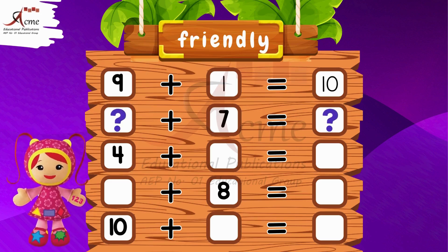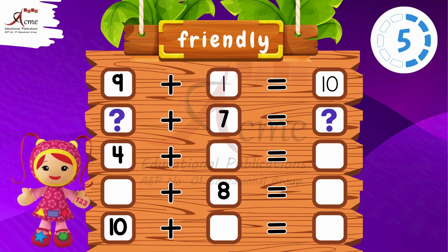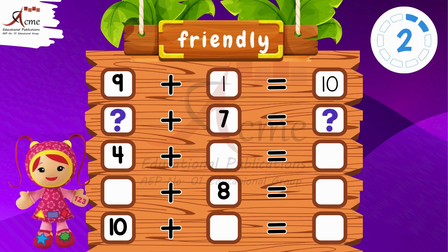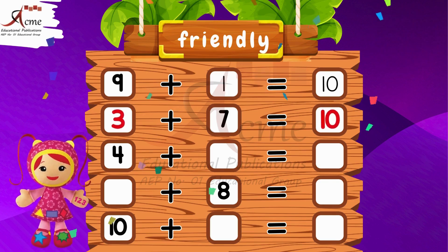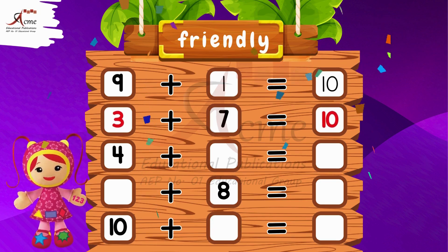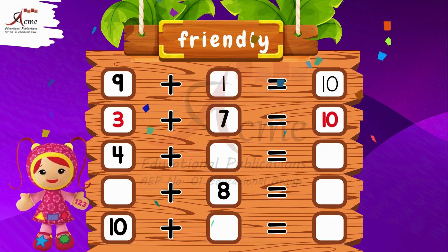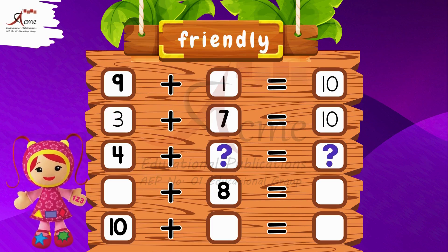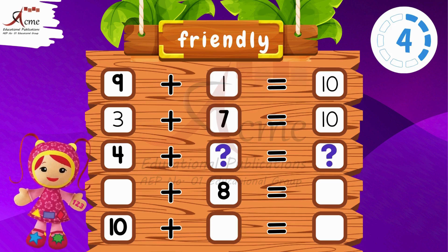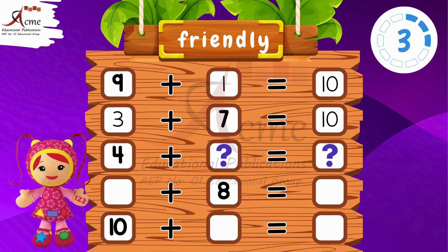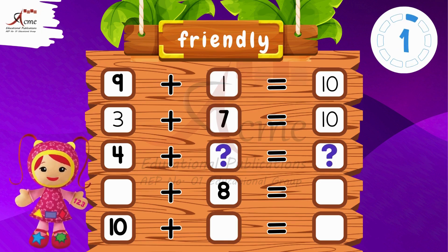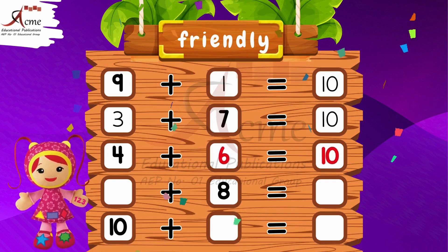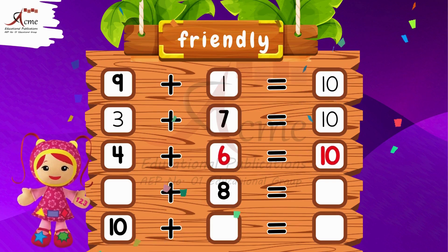What number do we need to add to 7 to make it a friendly number? Yes — 3 plus 7 equals 10. Well done. What number do we need to add to 4 to make it a friendly number? Correct — 4 plus 6 equals 10. Excellent.